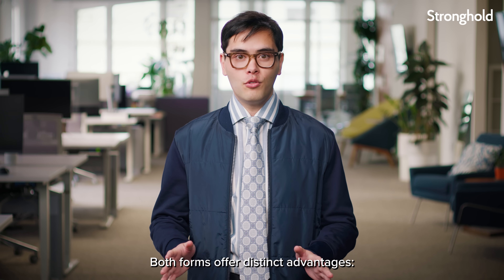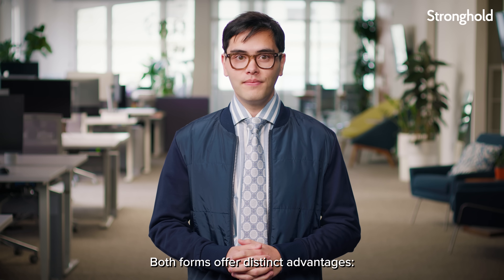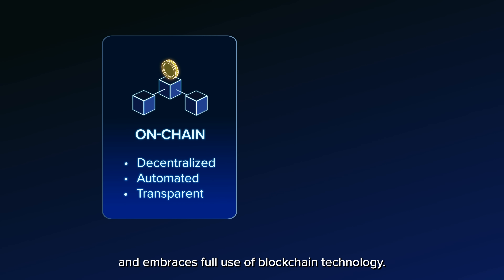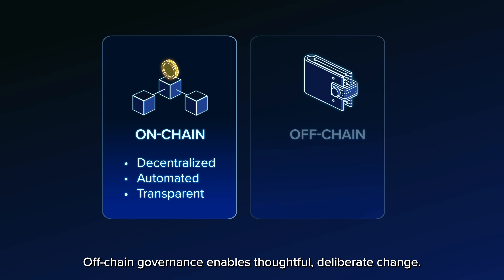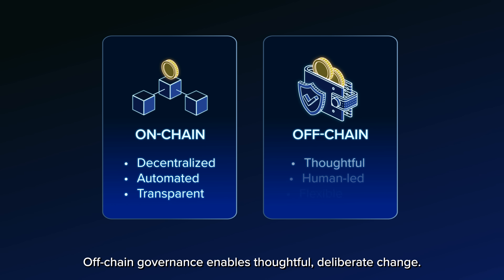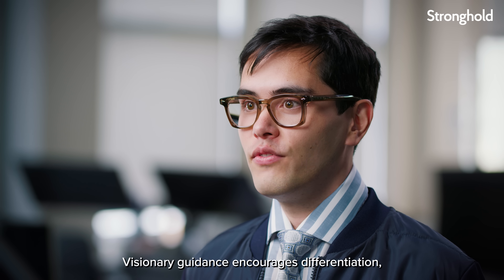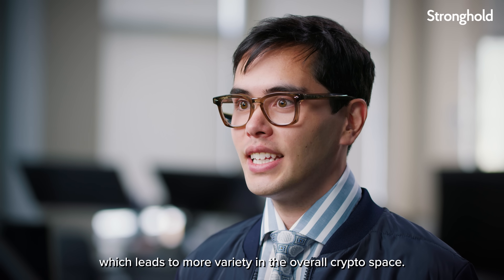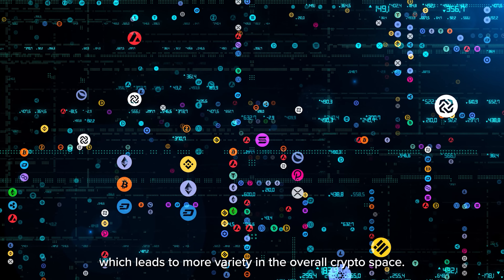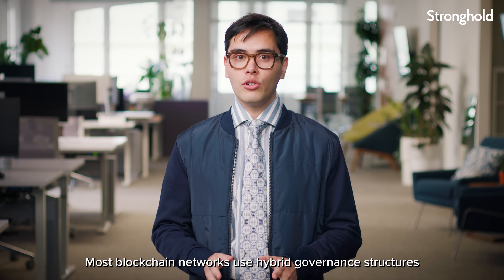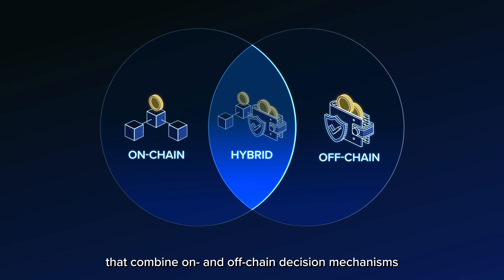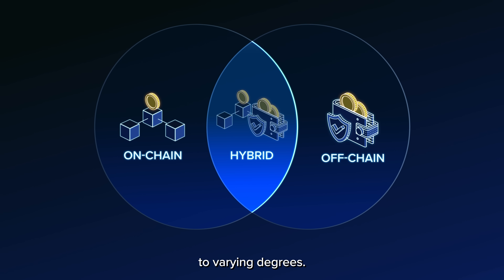Both forms offer distinct advantages. On-chain governance reflects the ethos of decentralization and embraces full use of blockchain technology. Off-chain governance enables thoughtful, deliberate change. Visionary guidance encourages differentiation, which leads to more variety in the overall crypto space. Most blockchain networks use hybrid governance structures that combine on- and off-chain decision mechanisms to varying degrees.